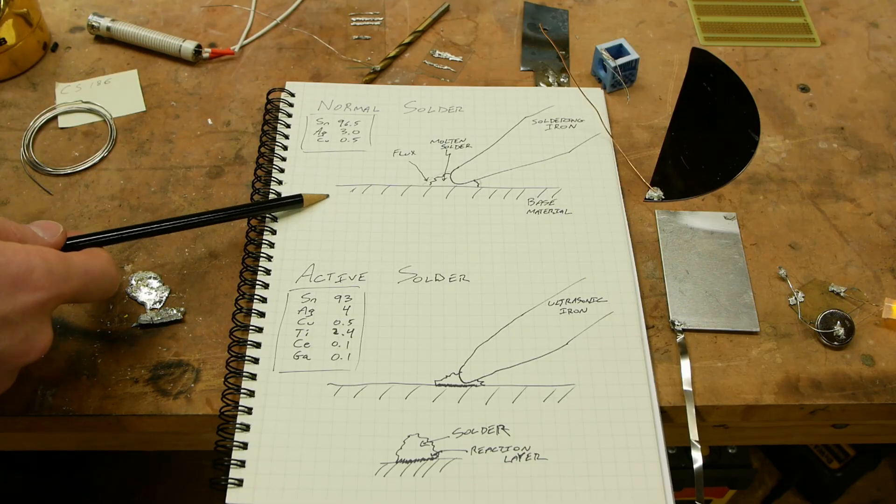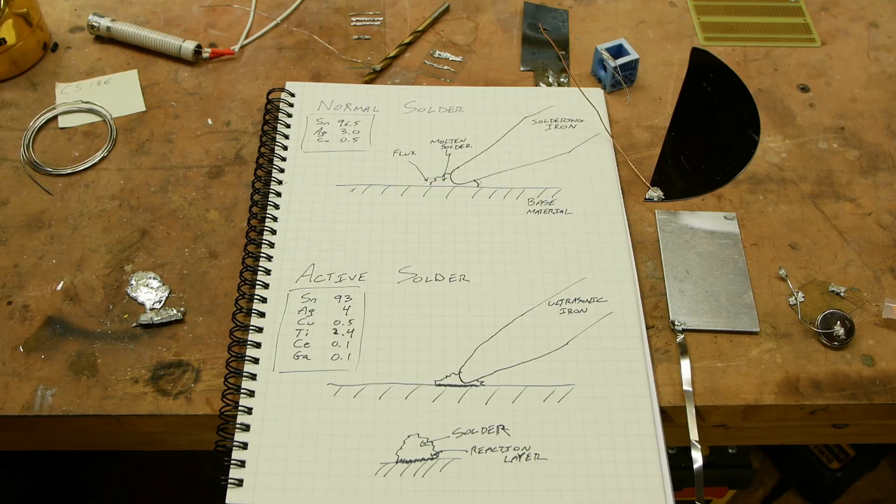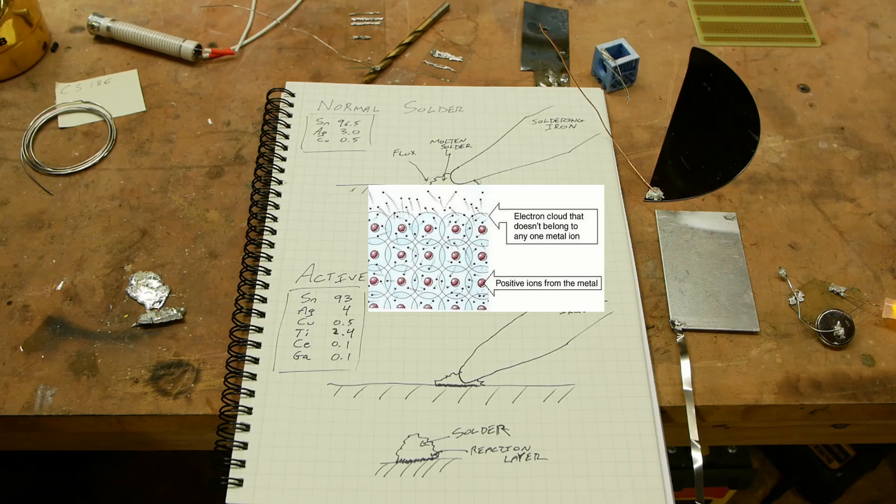So in conventional soldering, what we're looking for is a metal-to-metal bond. And this is good because all metals, as far as I know, use this metallic bonding, or it's this sea of electrons.